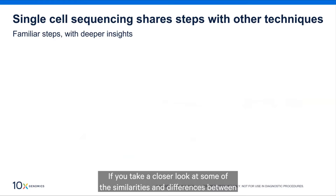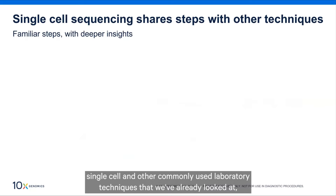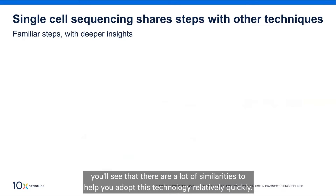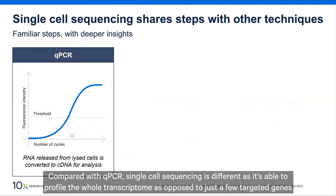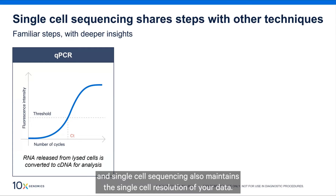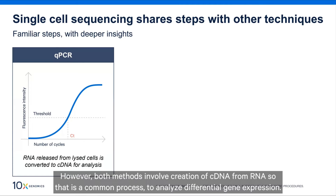Taking a closer look at the similarities and differences between single-cell sequencing and other commonly used laboratory techniques: compared to qPCR, single-cell sequencing is able to profile the whole transcriptome as opposed to just a few targeted genes, and it maintains single-cell resolution. However, both methods involve creation of cDNA from RNA, which is a common process used to analyze differential gene expression.